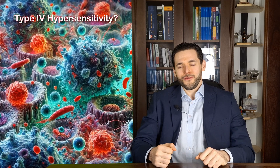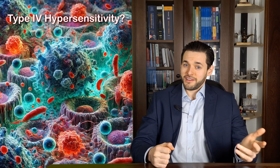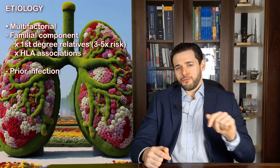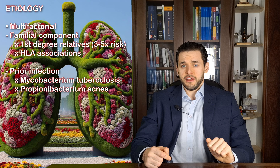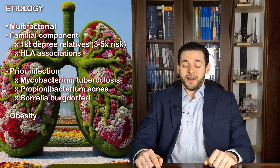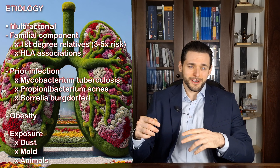Sarcoidosis sounds a lot like a hypersensitivity reaction, and it is very likely a type 4 hypersensitivity reaction — we're just not sure of the exact antigen. Like many hypersensitivity reactions, it's multifactorial. There is a familial component: first-degree relatives have a 2 to 5 times higher risk of the disease. There are many known HLA associations. Prior infection with Mycobacterium tuberculosis, Propionibacterium acnes, and Borrelia burgdorferi is also a risk factor, as is obesity.